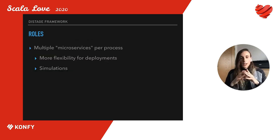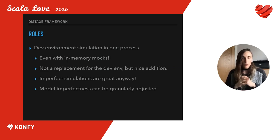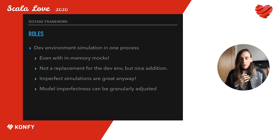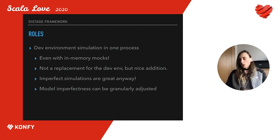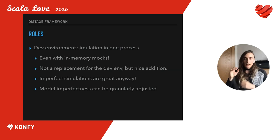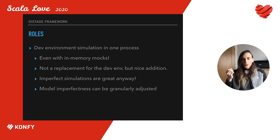Roles allow us to have multiple microservices in one process, which gives more flexibility for deployments and is especially important for simulations. You may have a simulation for your full dev environment, or perhaps a huge part of it, as a single process. Combined with in-memory dummies, it gives you a way to run your simulations lightning fast — even on a single machine with a single command, without complex and slow setup phases. I'm not saying these simulations are a perfect replacement for a full dev environment, but they don't have to be. Their purpose is to let you continuously integrate your services properly after each commit and build a cheap automatic filter at the beginning of your delivery pipeline.